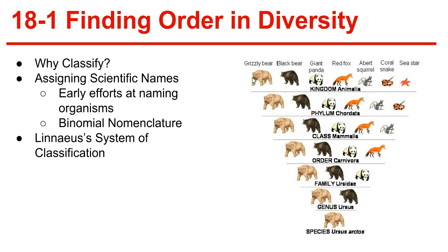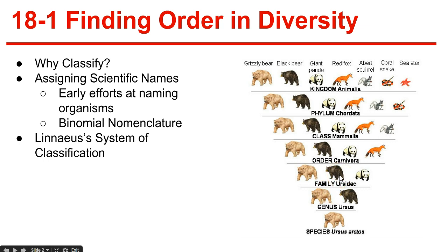Each level is called a taxon. The genus is a group of closely related species — for example, the brown bear and the grizzly bear. The family is a group of genera (plural of genus) that may share characteristics. Order is a group of similar families. Class is a group of similar orders. Phylum is a group of closely related classes. And finally, the kingdom is the large taxonomic group consisting of closely related phyla.